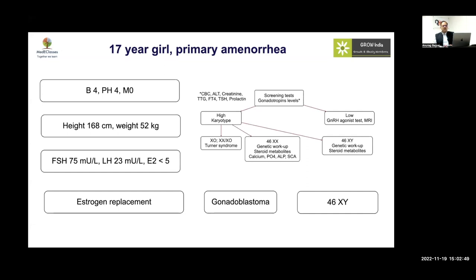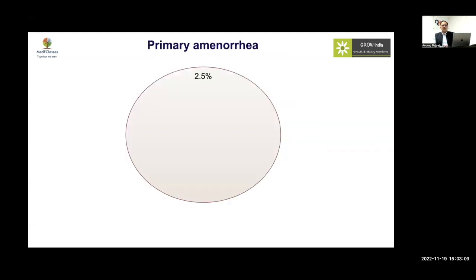What happened on follow-up was depressing — the child developed a gonadoblastoma, because a proper karyotype assessment was not done. When we checked the karyotype, it was actually an XY phenotype. This gives a big message: even if we have classical features of hypergonadotropic hypogonadism, we should always check the karyotype, especially if somebody is tall, where we need to be very cautious in terms of assessment.